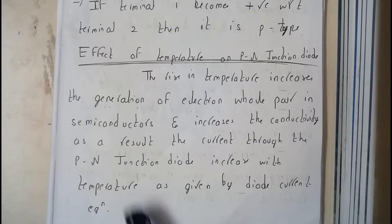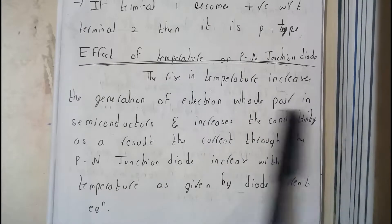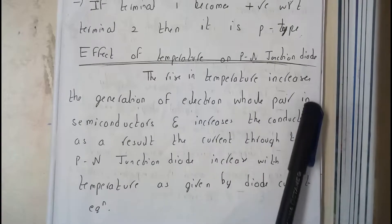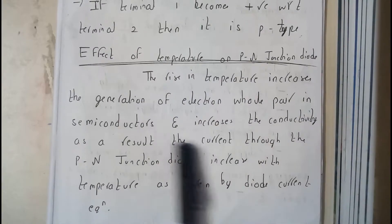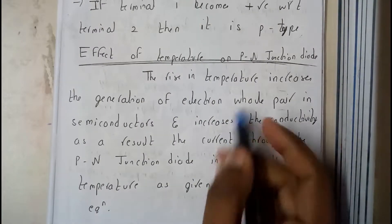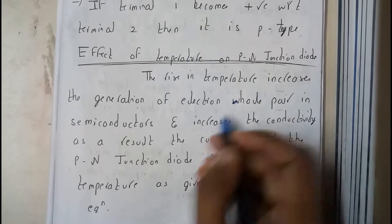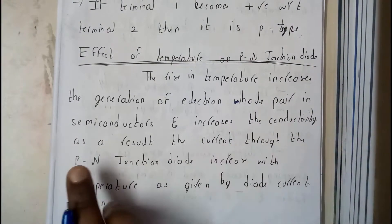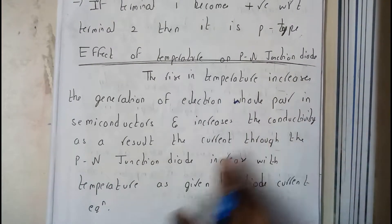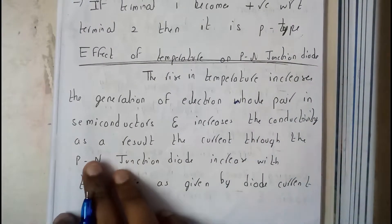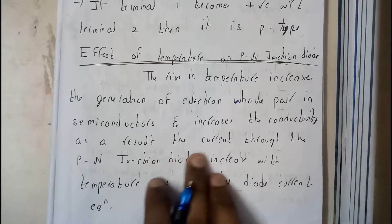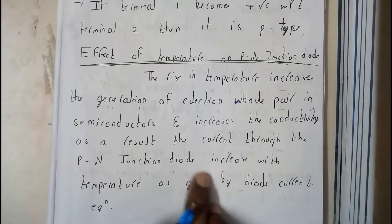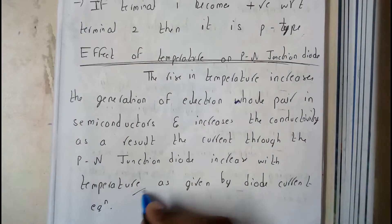The rise in temperature increases the generation of electron-hole pairs in the semiconductor and increases the conductivity. As a result, the current through the P-N diode increases with respect to temperature.